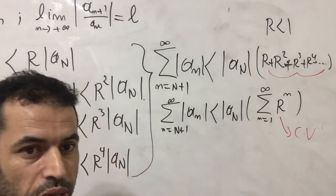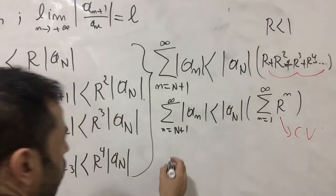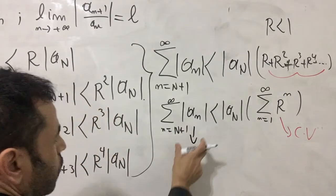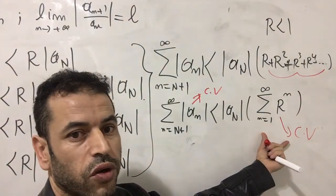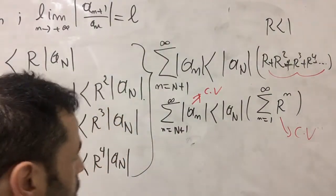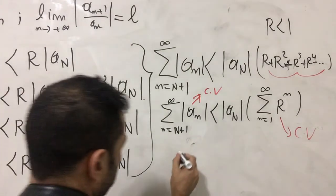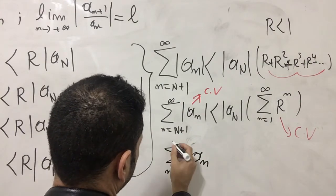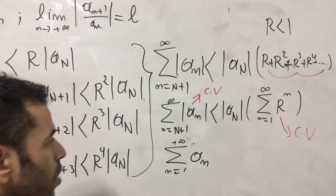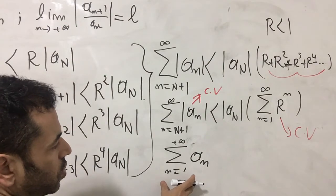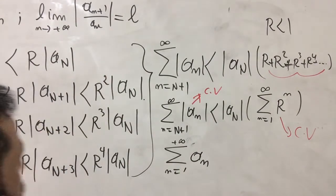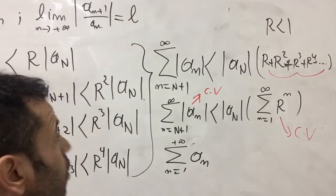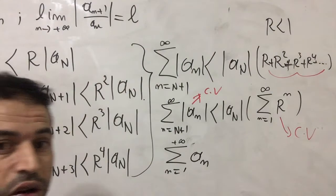By using the comparison test, we conclude this series Σ|a_n| from N+1 to infinity is a convergent series as well, because the geometric series is convergent. This means the series Σa_n as n goes from 1 to infinity is our goal to prove convergent when the ratio test gives L strictly less than 1.